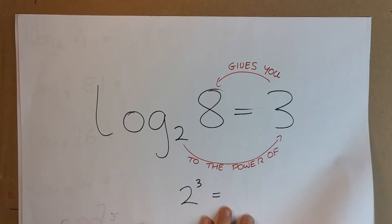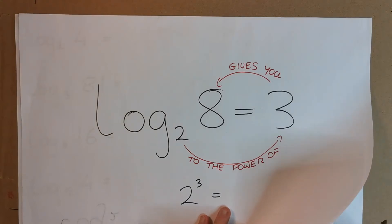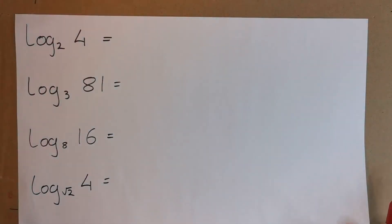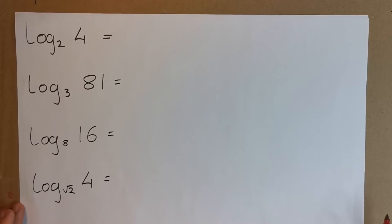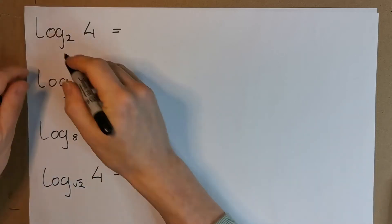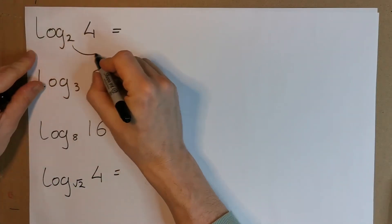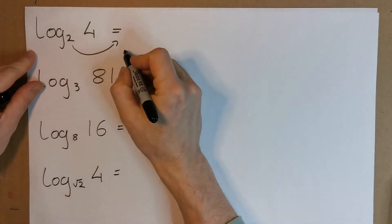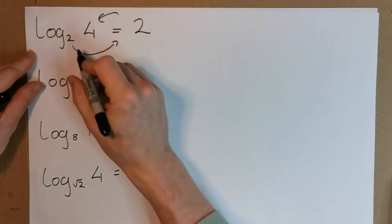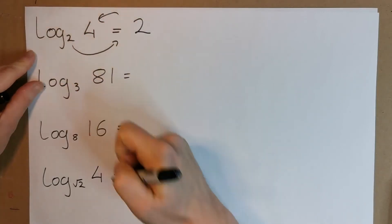Let's do a couple of little tricky ones. These really are higher level type questions, so hopefully you've tried some like these. Let's start off with an easy one and go on to slightly trickier ones. We're not going to use a calculator for this. So, log base 2 of 4 — 2 to the power of something gives me 4. We know that should be 2, because 2 to the power of 2 gives me 4.